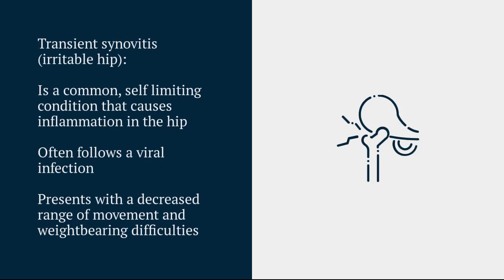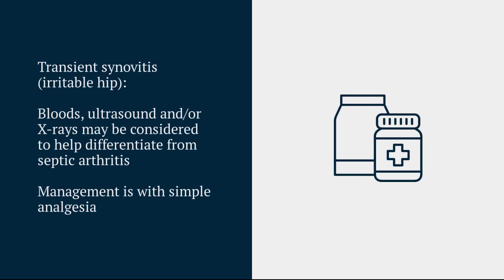Moving on to transient synovitis, otherwise known as an irritable hip. This is a really common condition that we see in younger children particularly, where there's inflammation in the hip. It often follows a viral infection and is largely self-limiting. It commonly presents with pain in the hip, a decreased range of movement, and a reluctance to weight bear. One of the key differentials is septic arthritis, so we might end up doing some blood tests. Ultrasound and x-rays may be considered as well, but they're often looking for other diagnoses rather than the irritable hip. We manage these patients with a good safety net and simple analgesia.